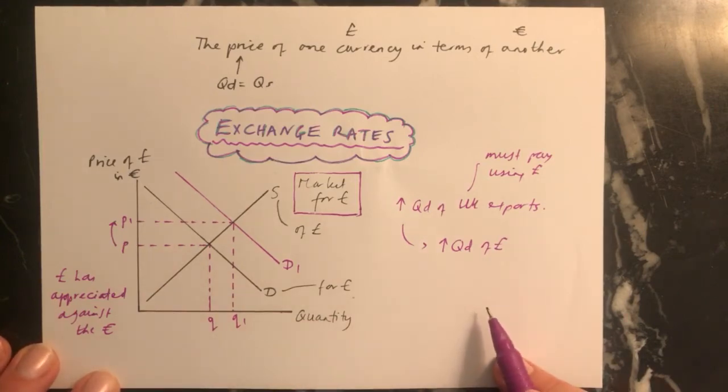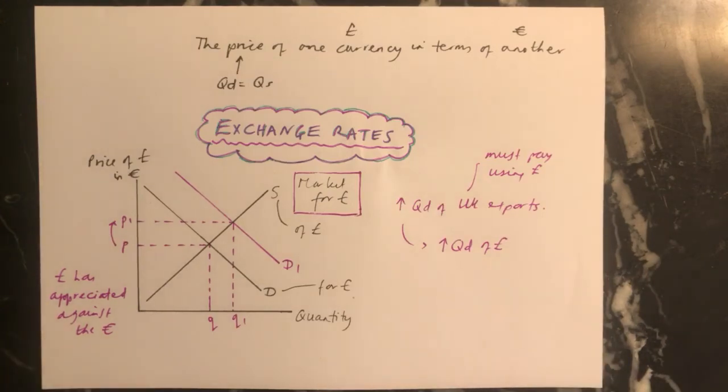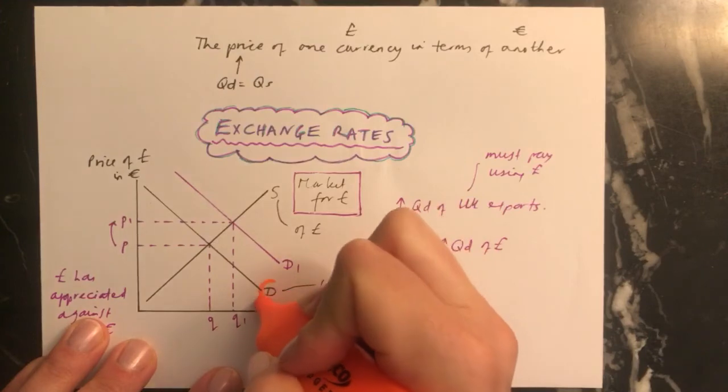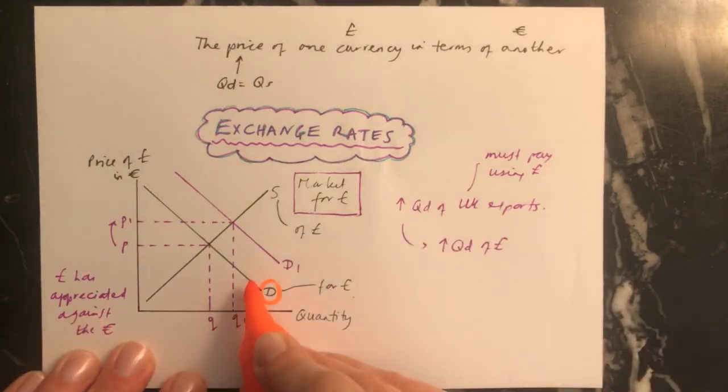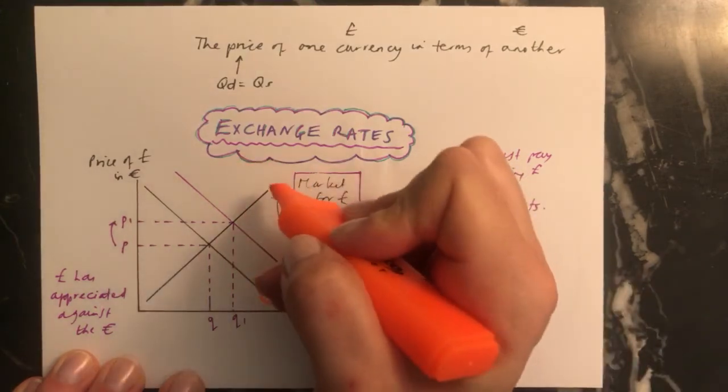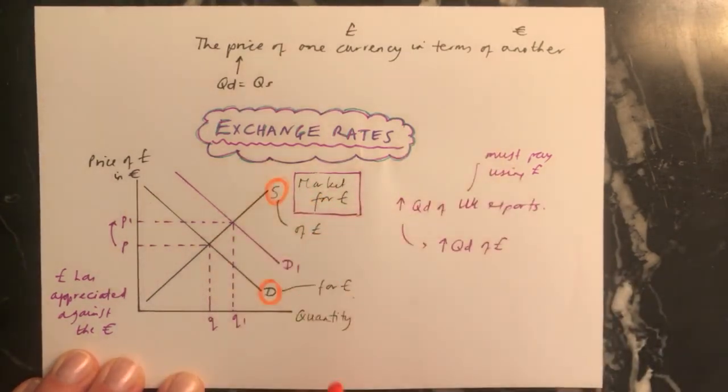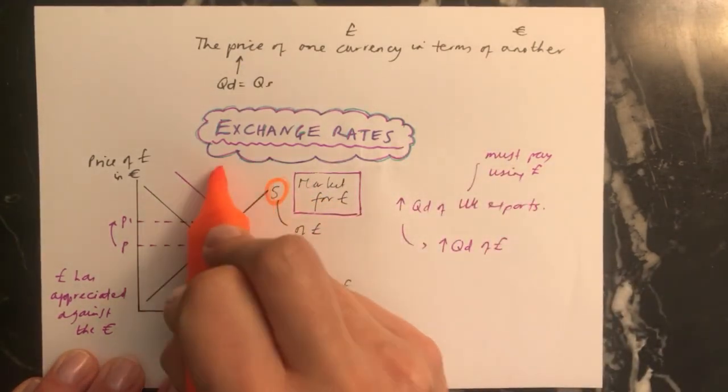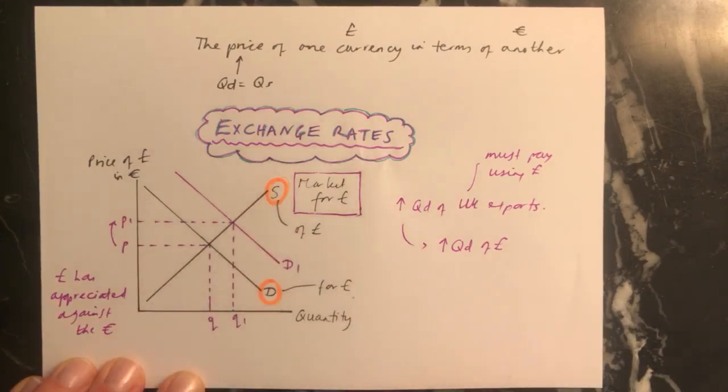And then you can just look at lots of different situations and you can see whether it's going to affect, you always need to be thinking, does it affect the demand for the currency? Will that be shifting either less demand for the currency or more demand for the currency? Or is it affecting the supply of the currency? Is there going to be less supply of the currency or is there going to be more supply of the currency? And we'll look at that a bit more in some other videos.